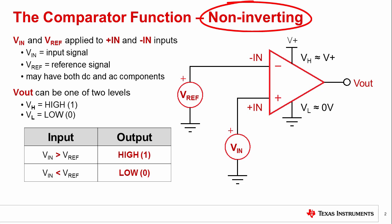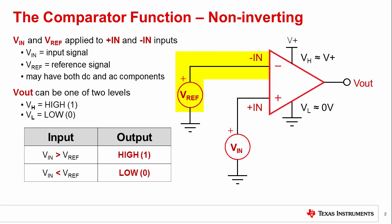The comparator shown on this slide is configured for non-inverting operation. In this condition, VIN, the input signal, is connected to the non-inverting input, +IN, and VREF, the reference signal, is connected to the inverting input, -IN. If VIN is greater than VREF, the comparator output goes high. If VIN is less than VREF, the output goes low.